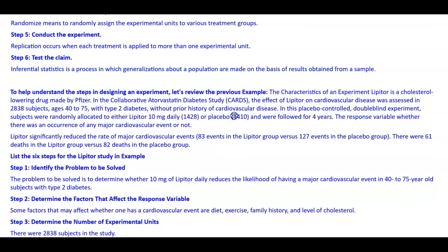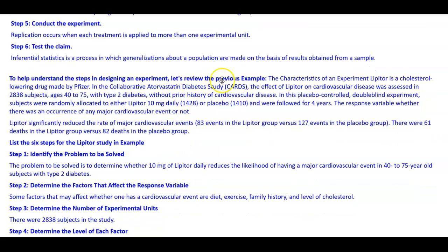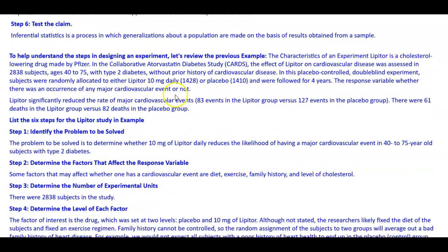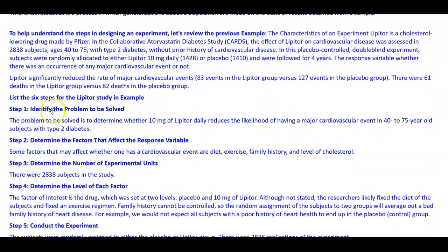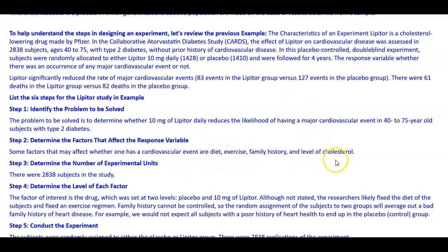To help understand the steps in designing an experiment, we'll review the Lipitor example. Step one: identify the problem — to determine whether 10 milligrams of Lipitor daily reduces the likelihood of having a major cardiovascular event in 40 to 75 year old subjects with type 2 diabetes. Step two: determine the factors that affect the response variable. Some factors that may affect whether one has a cardiovascular event are diet, exercise, family history, and level of cholesterol.